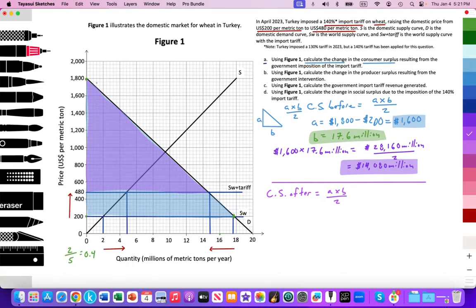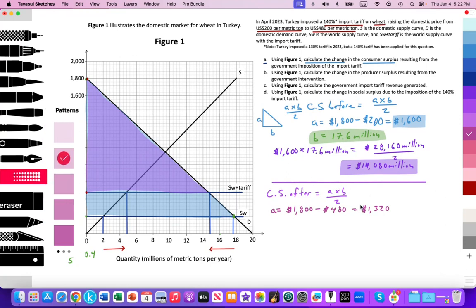This will illustrate the new triangular area we're calculating. We have the y-intercept of 1,800, but at a higher price of 480. The height of A equals 1,800 minus 480, that higher price, which equals 1,320. I'll highlight that.